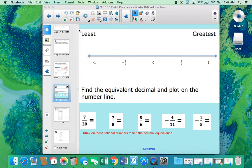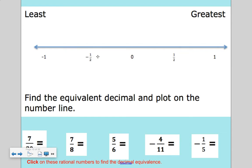Compare and order rational numbers. So as a reminder, in the number line, it goes from least to greatest.